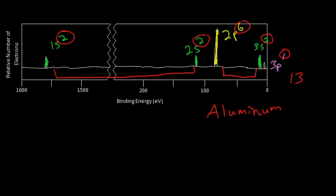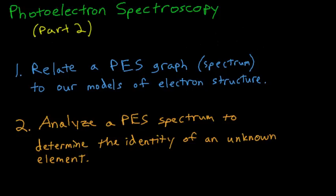So if I've done my job well, then you should be able to do two things. You should be able to relate a PES graph or spectrum to our models of electron structure, and you should be able to analyze a spectrum and determine the identity of an unknown element.